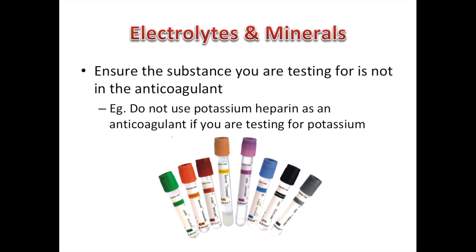When taking blood for these specific tests to check electrolyte levels, we have to make sure that the substance we're testing for isn't in the anticoagulant. With a lot of these, we want to avoid an anticoagulant altogether, because they can either increase or decrease the value of the electrolyte. For example, we wouldn't want to use potassium heparin as an anticoagulant if we're testing for potassium, because it will give us invalid results.